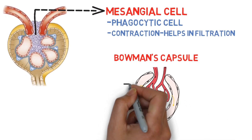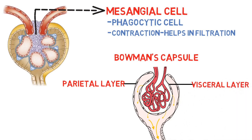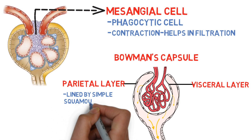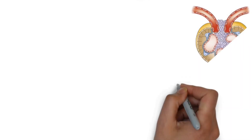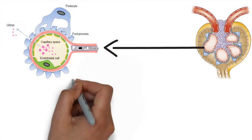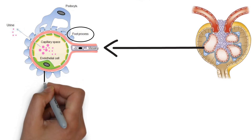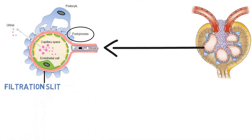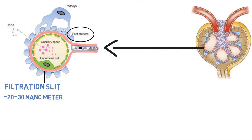Bowman's capsule is a urinary space lined by two epithelial layers: outer parietal epithelium and inner visceral epithelium. The outer parietal epithelium is lined by simple squamous epithelium. The inner visceral layer is made up of specialized cells called podocytes. Each podocyte has foot processes. A foot process of one podocyte connects with the foot process of another podocyte to form a longitudinal slit known as a filtration slit. The size of the filtration slit is about 20 to 30 nanometers, so this acts as a size barrier.